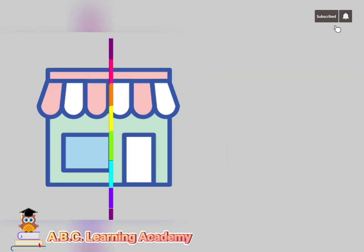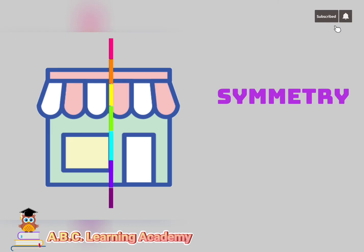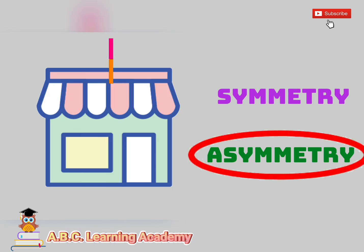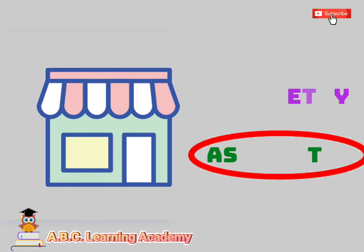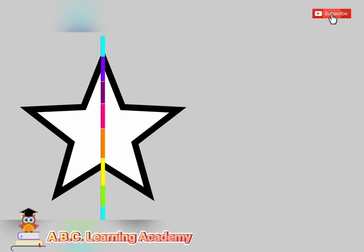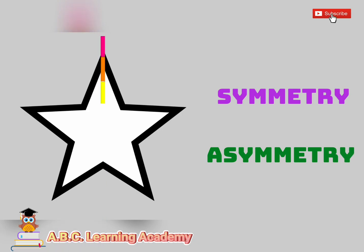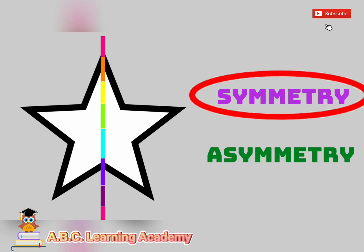Next picture — look at the line of symmetry. You're right, it's asymmetry. Next picture, is this one symmetry or is it asymmetry? You're right, it's symmetry.